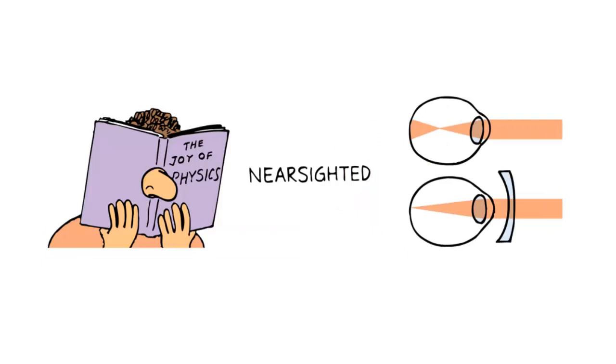Nearsightedness is when a person can see things that are up close but not far away. In most cases this is because the eyeball is actually too long. This can happen when you grow. I had perfect vision until I was a teenager and then it just went bad.